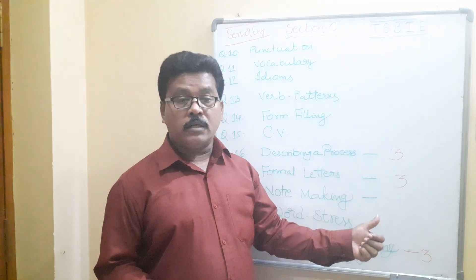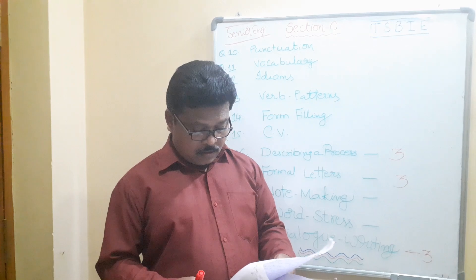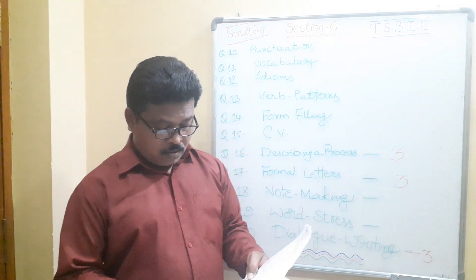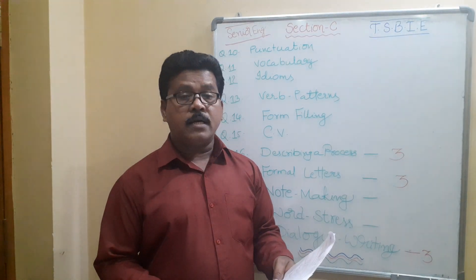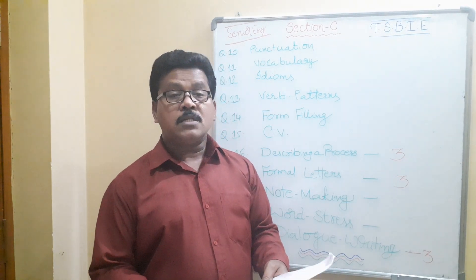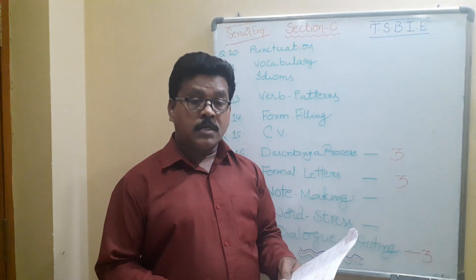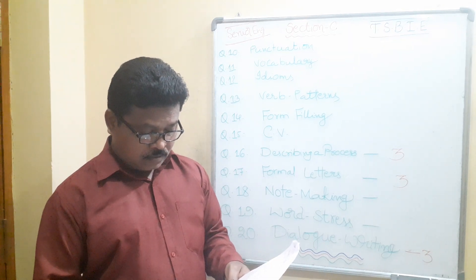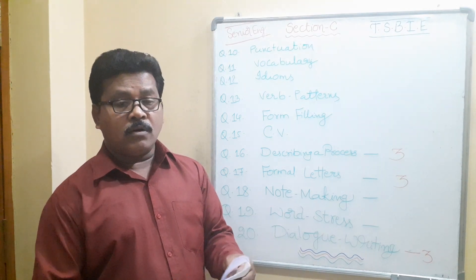Question number 17 is formal letters only — informal letters are not there this time. Three will be given and you write only one. Important ones include: letter to the principal requesting TC or bonafide memo, letter to a publisher to send study material, letter to the editor against skyrocketing prices, letter to the municipal commissioner about bad road conditions, letter to the tasildar about cleaning the village lake or tank, and letter to the district collector against unused open borewells. Use modern format only, not the old format.